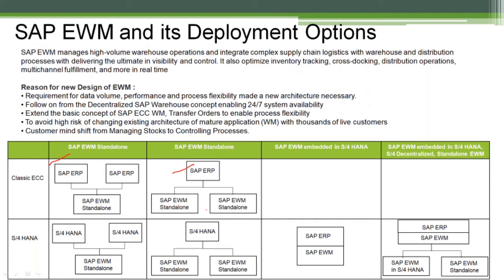In S4HANA, both embedded and decentralized deployment options are available. ERP modules like MM, PP, SD, and QM can be part of S4HANA, and you can continue to use EWM as a decentralized or standalone warehouse installed separately in NetWeaver. One ERP system can have one or more decentralized EWM systems depending on the number of warehouses needed, and those decentralized warehouses can also be connected to a S4HANA ERP system.